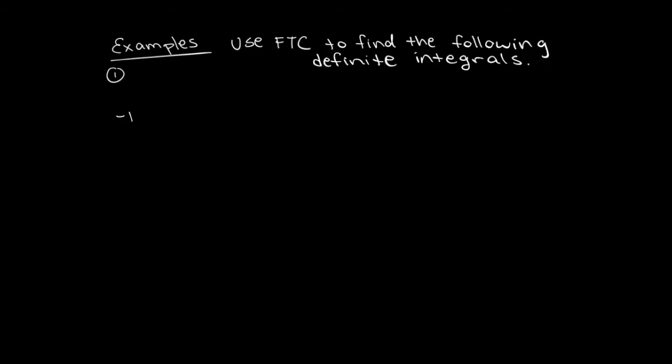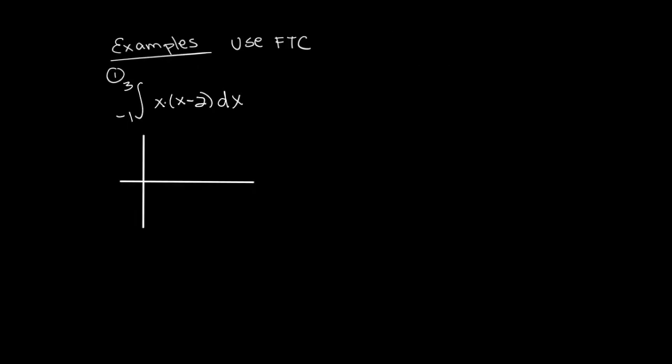Now let's do some examples. We're going to find the net area on the graph of x times x minus 2 using the fundamental theorem of calculus. Let's visualize what it is that we're calculating. What does the graph look like of x times x minus 2? That's x squared minus 2x. So it's a parabola.